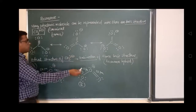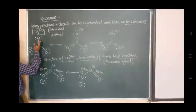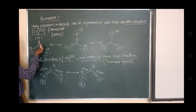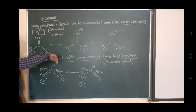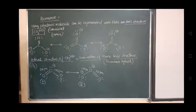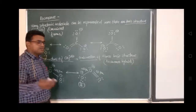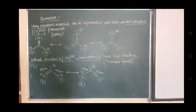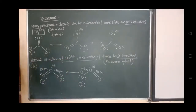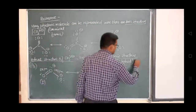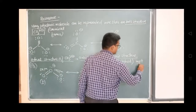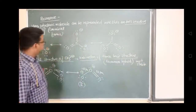None of these individual structures is adequate to explain all properties. The actual structure of CO₃²⁻ is a combination of these three Lewis structures, which are called canonical forms. By combining all three, we get the resonance hybrid, which represents the most stable structure for this molecule.